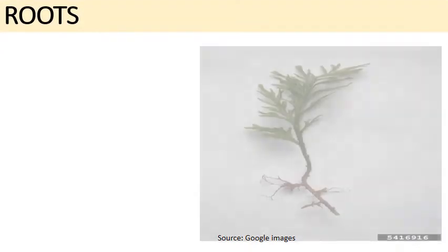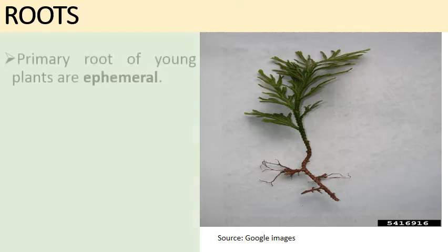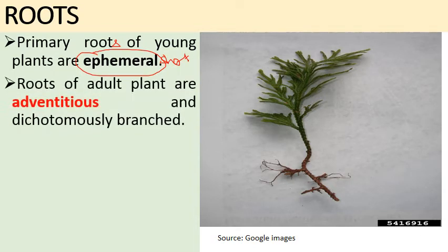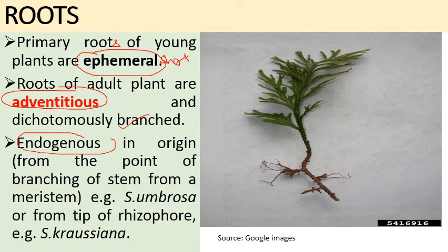Regarding roots: primary roots in Selaginella are ephemeral — short-lived — in young plants. In adult plants, these are replaced by adventitious roots which are dichotomously branched. The roots of adult plants are adventitious and dichotomously branched.